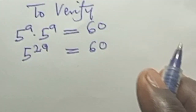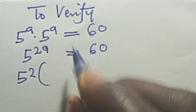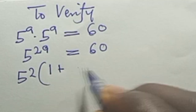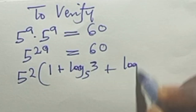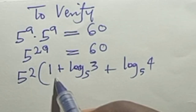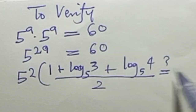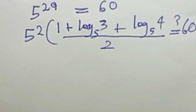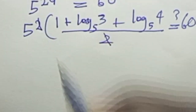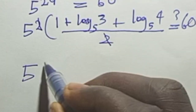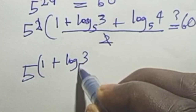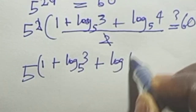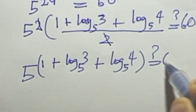For verification, 5 raised to the power 2a, where 2a equals 1 plus log base 5 of 3 plus log base 5 of 4, equals 60. Here 2a cancels out and we are left with 5 raised to the power 1 plus log base 5 of 3 plus log base 5 of 4 equals 60.